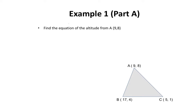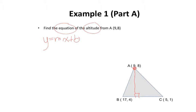In our first example, we want to find the equation of the altitude from point A. There are two key pieces of information here, one of them being the equation. Remember, the equation of a line in slope-intercept form is y equals mx plus b. Now, what exactly is an altitude? If you look at this diagram, this would be point A. If you extend a line from point A to line segment BC, it has to create a 90-degree angle. I'm going to call the point at which this altitude intersects line segment BC point D.